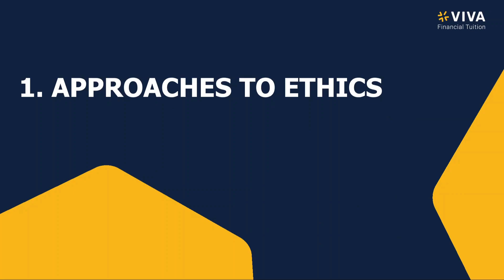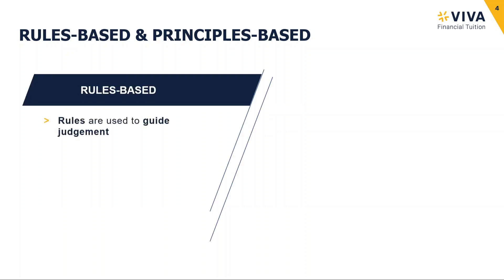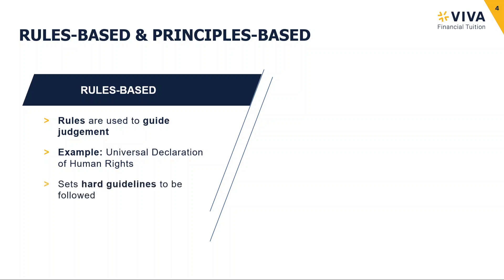So firstly, let's look at the approaches to ethics. There are two broad approaches you could take regarding ethics: a rules-based approach and a principles-based approach. With a rules-based approach, we have rules there that guide our judgment. For example, there is a Universal Declaration of Human Rights, which contains some rules that we would expect people to adhere to. Rules are hard guidelines — sometimes they are things that you must do or must not do.